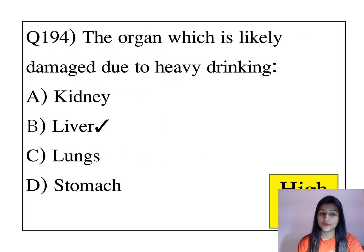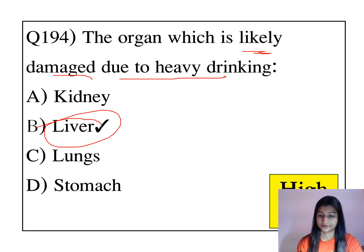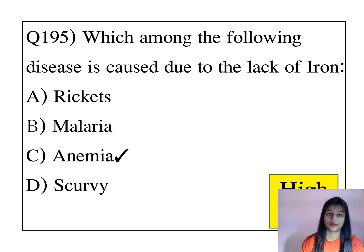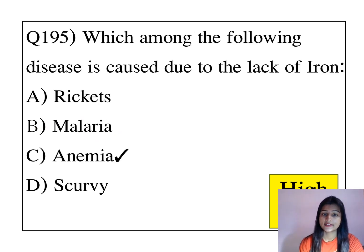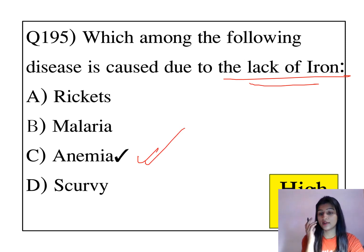The organ which is likely damaged due to heavy drinking is the liver. Among the following, which disease is caused due to lack of iron? Anemia is caused due to lack of iron.